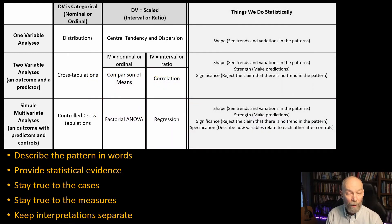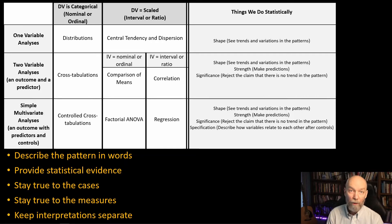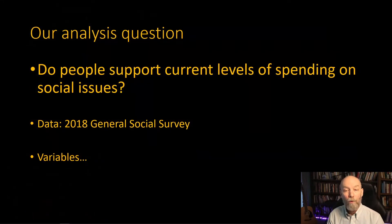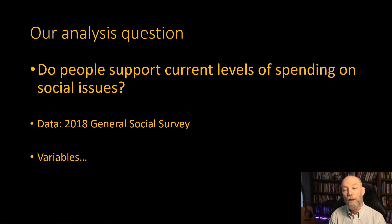In a previous video, I showed a framework for statistical analysis in applied settings that introduced a way to choose the right tools, see what results to look for after running those tools, and how to write up or present the results to answer the original question. Today I'm working with the question: do people support current levels of spending on social issues?